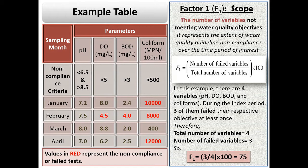Scope represents the number of parameters or variables not meeting prescribed guidelines and is calculated by the formula F1 = (number of failed variables/total number of variables) × 100. Here, failed variables mean those parameters which has at least one measured value that does not meet the limit prescribed by the standard.